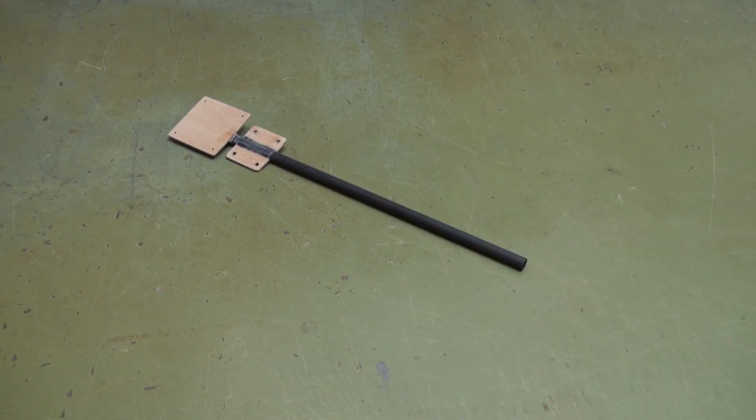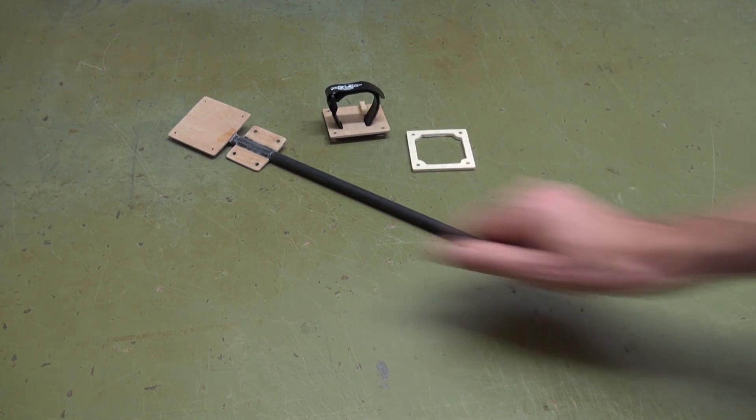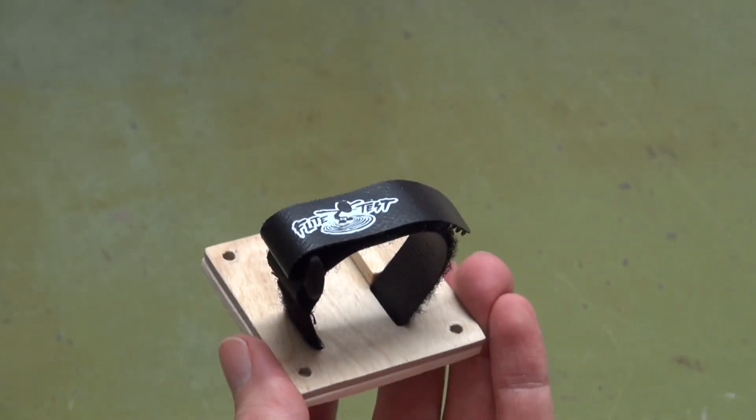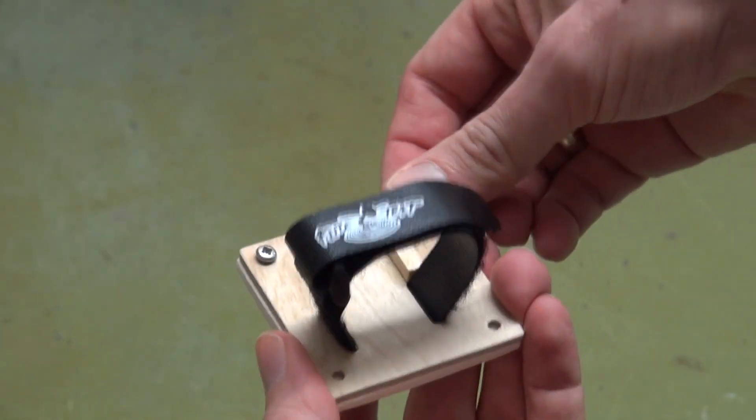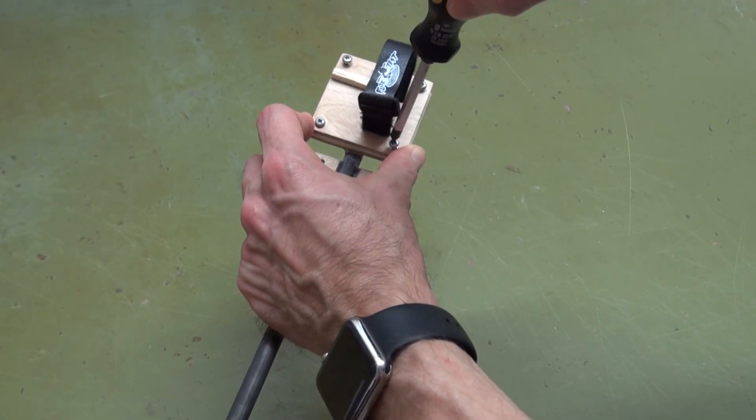Now grab your rear facing stick, the GoPro mount, the intermediate plate, and the four screws. Insert the screws into the GoPro mount and the intermediate plate, and screw it to the rear stick.